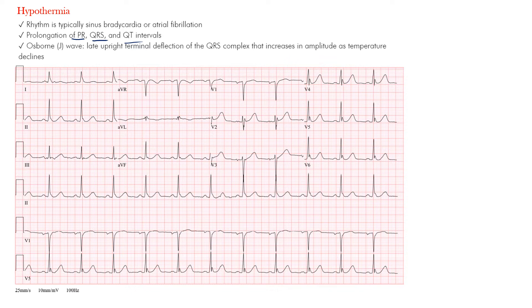There is one particular wave you want to be aware of: the Osborne wave. The Osborne wave is a positive deflection at the J point. It may be negative in leads AVR and V1, but typically it is a positive deflection at the J point, most prominent in the precordial leads. The amplitude of this wave tends to be proportional to the degree of hypothermia. You may also see concomitant ST depression and T wave inversion in some cases. Other findings include ectopic beats, ventricular tachycardia, and ventricular fibrillation.